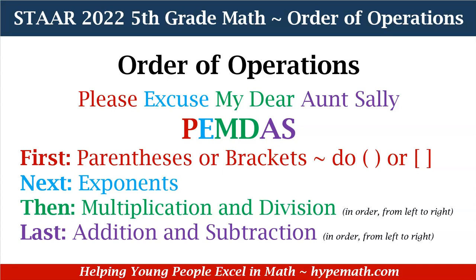Let's dive in. First, we have parentheses or brackets. Next up, exponents. Then, multiplication and division in order from left to right. If you have an expression and division comes first and then there's multiplication, don't jump to multiplication. You are going to start with the division because, again, it's multiplication and division in order from left to right.